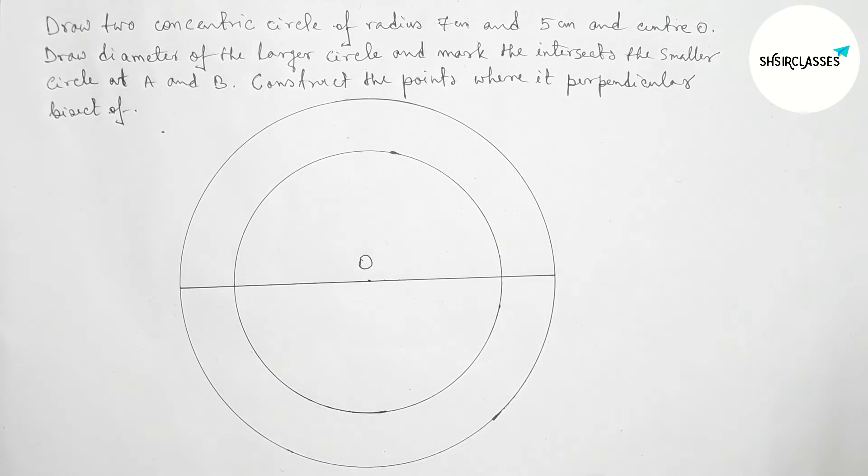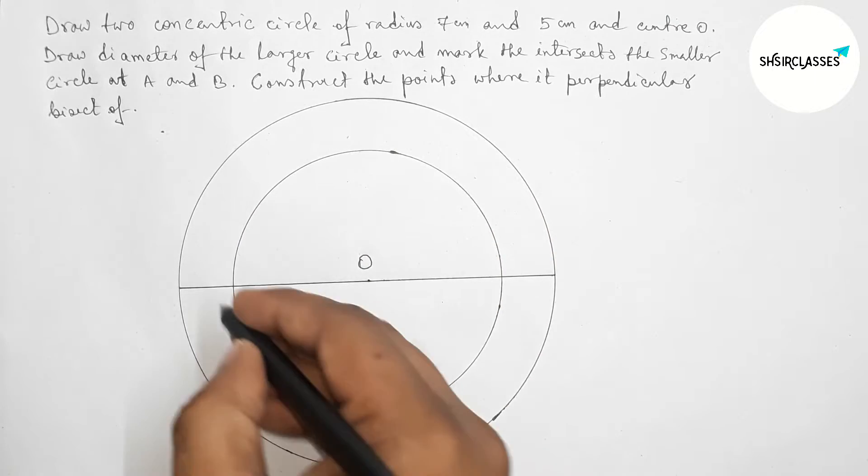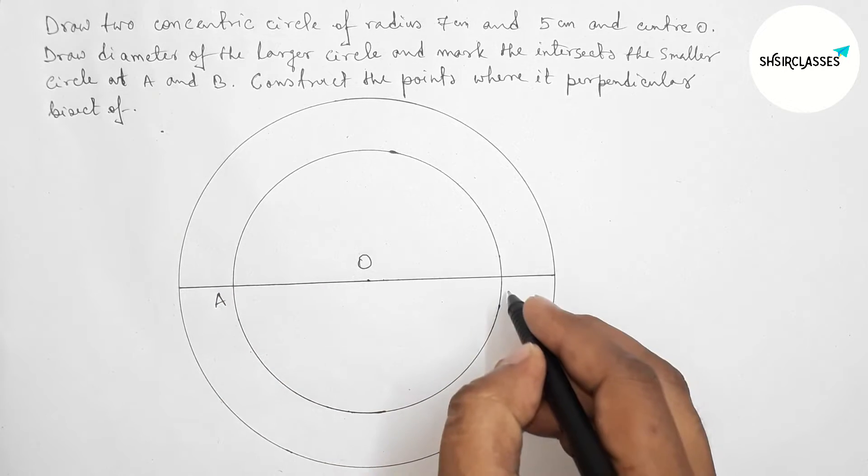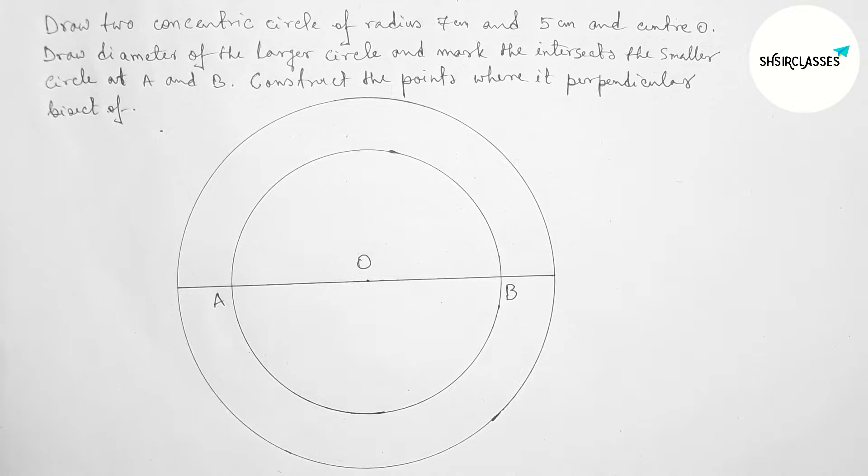Joining this diameter. The diameter intersects the smaller circle here at points A and B.